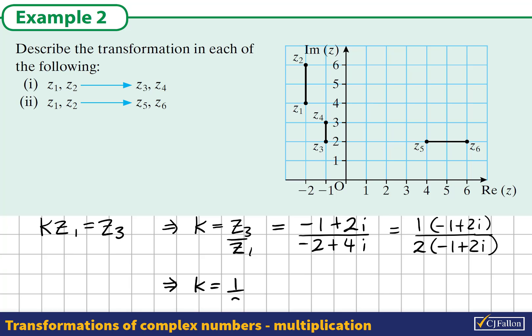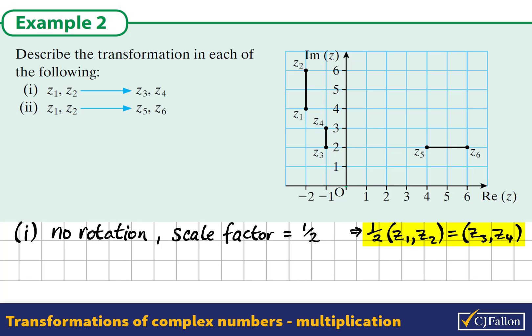The same answer we got before. So the multiplier of transformation is a half. In part 2, we are asked to describe the transformation that maps Z1 onto Z5 and Z2 onto Z6.